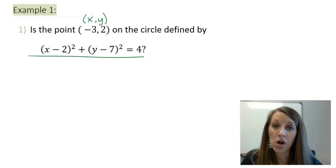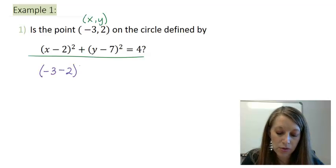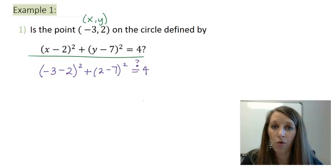So let's just plug it in and see what happens. So my x is (-3 - 2)², plus substitute 2 in for y, (2 - 7)². And we want to see, is that equivalent to 4 or not?